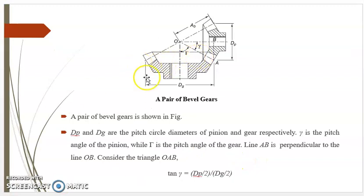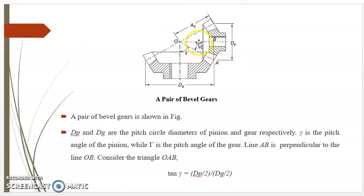Now see this diagram — it consists of a pair of bevel gears. DG is the pitch circle diameter of the gear, DP is the pitch circle diameter of the pinion, A0 is the cone distance. Small gamma is the pitch angle of the pinion and large Gamma is the pitch angle of the gear. Triangle OAB is shown. DP and DG are the pitch circle diameters of the pinion and gear respectively. Gamma is the pitch angle of the pinion, while large Gamma is the pitch angle of the gear.